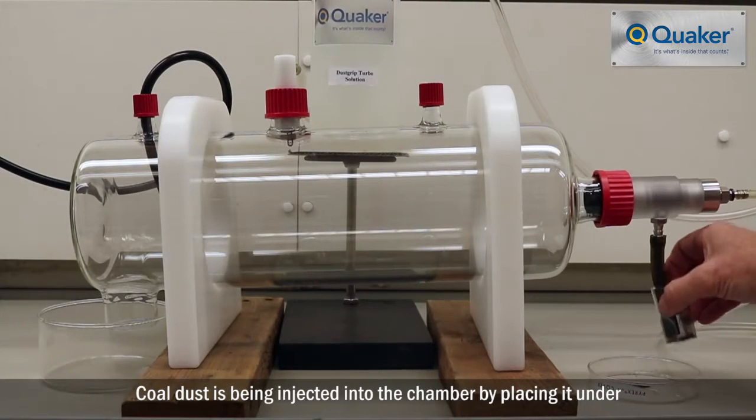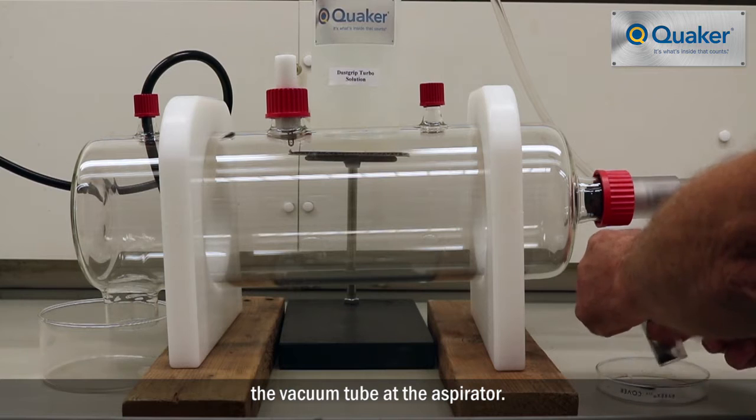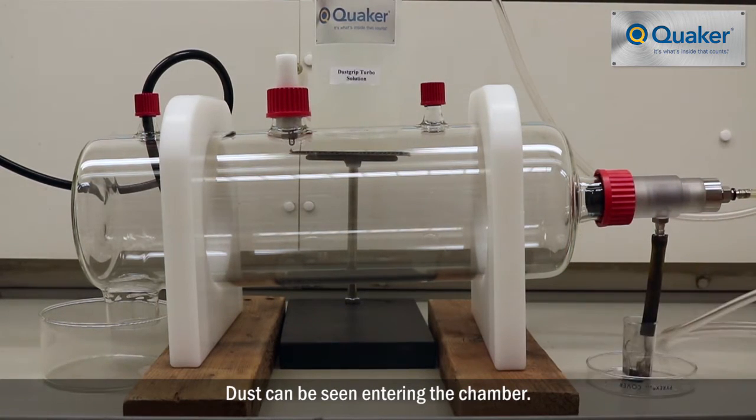Coal dust is being injected into the chamber by placing it under the vacuum tube at the aspirator. Dust can be seen entering the chamber.